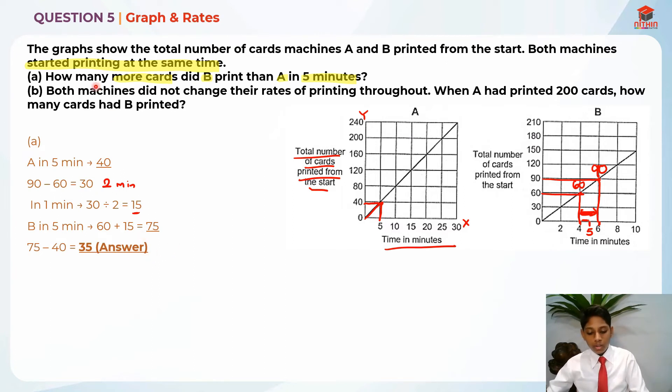Now, let's read part B. Both machines did not change their rates of printing throughout. So they started at the same time and their rates did not change. So, A printed 40 in 5 minutes and B printed 75 in 5 minutes. So that's our rate.